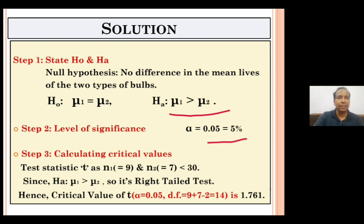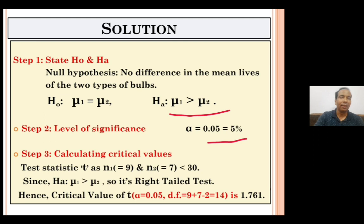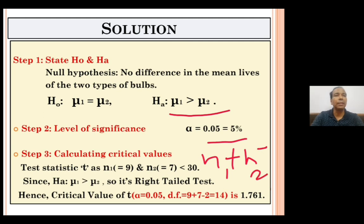For the critical value, we look it up in the T-table. Here N1 = 9 and N2 = 7, so both sample sizes are below 30. Since the alternative hypothesis has a greater-than sign, this is a right-tail test. The degree of freedom is N1 + N2 − 2. With N1 = 9 and N2 = 7, that gives 9 + 7 − 2 = 14.